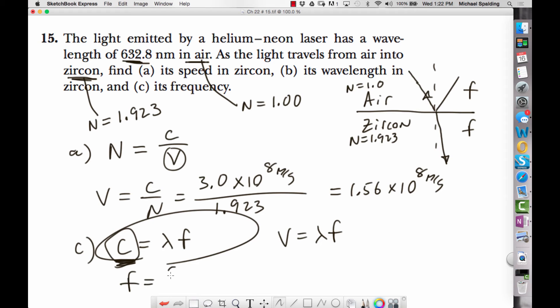So frequency is going to be C over lambda. So we go 3 times 10 to the 8th meters per second. We're going to take this given wavelength right here,